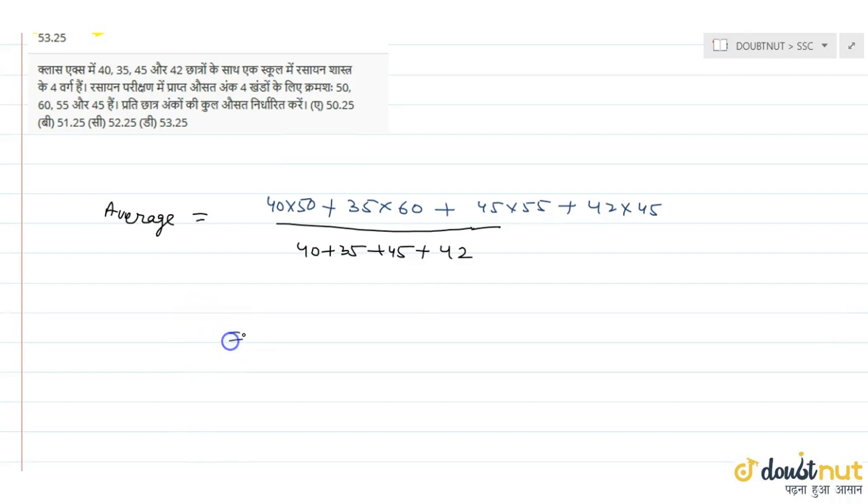Let's simplify. 40 into 50 is 2000, plus 35 into 60 is 2100, plus 45 into 55 is 2475, plus 42 into 45 is 1890, whole divided by...